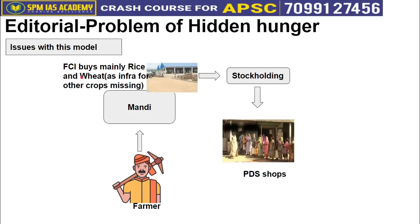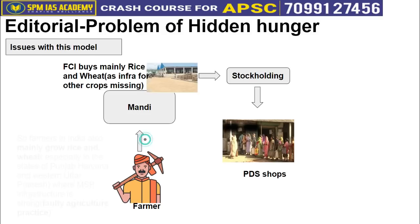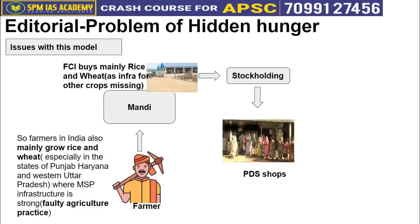Since farmers know that only rice and wheat effectively sell at MSP, they grow mainly those two crops — especially in areas where MSP infrastructure is strong, like Punjab, Haryana, and western Uttar Pradesh. Farmers in these areas grow both rice and wheat even if the climatic and soil conditions don't naturally suit rice cultivation.